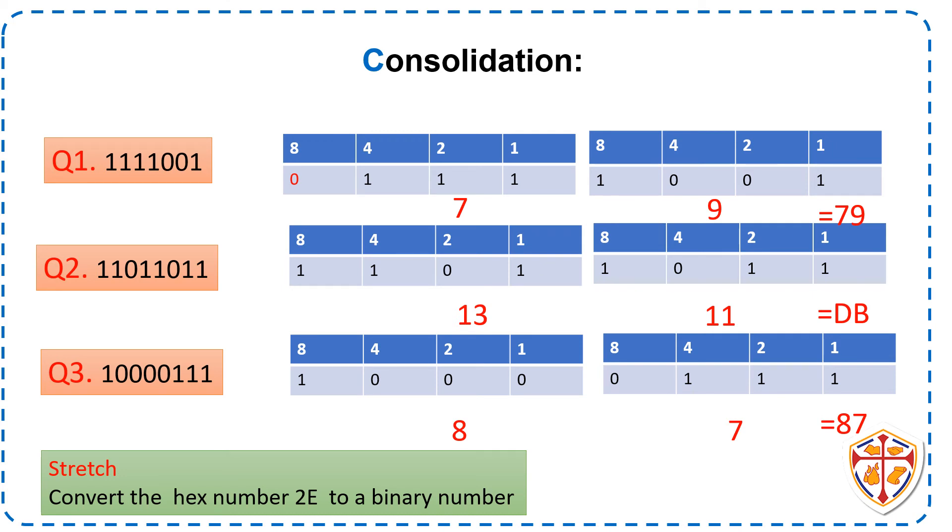Question 3. We have 8 bits. We split into nibbles. First nibble we got 8. Second nibble we added 4 plus 2 plus 1. We got 7. Put our answers together. The answer is 87. So now for the stretch. We want to convert hex number 2E to a binary number. Good luck.